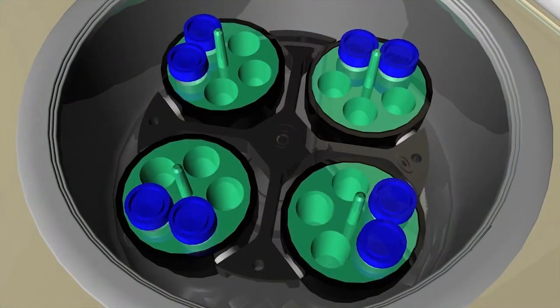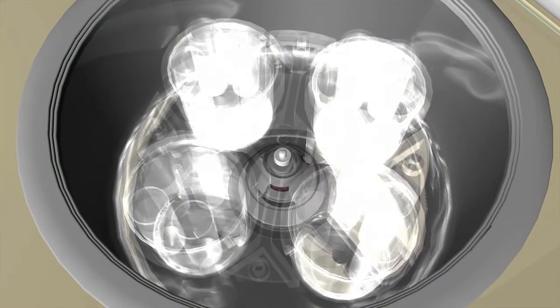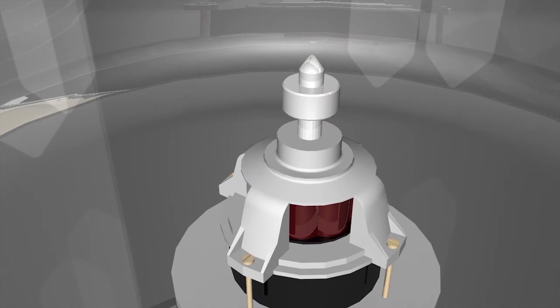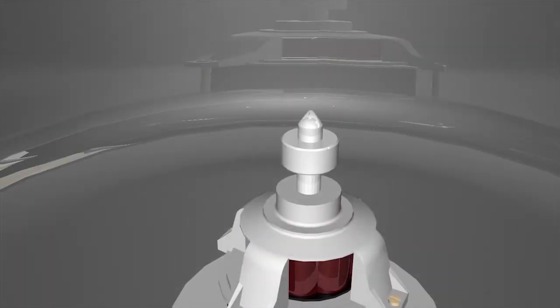In this centrifuge, we have placed a swinging bucket rotor. If we go below the rotor and look into the lower part of the centrifuge, we see an electric drive motor.